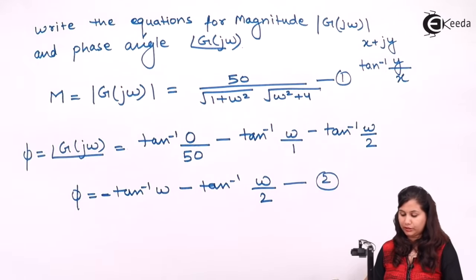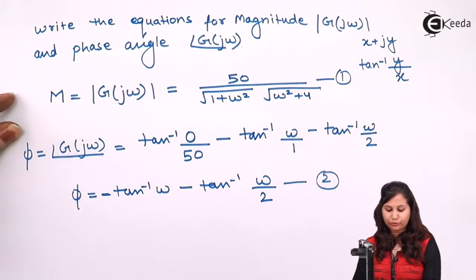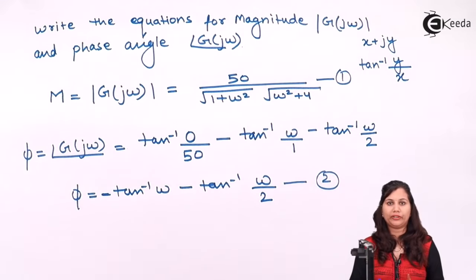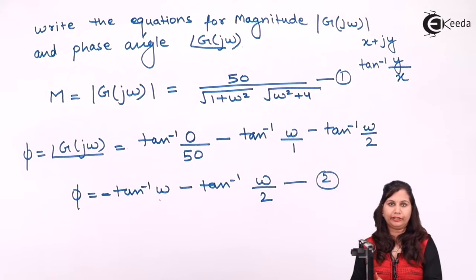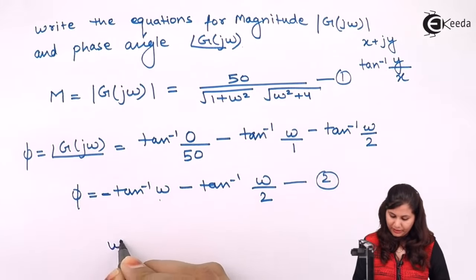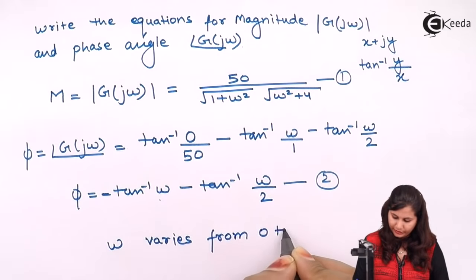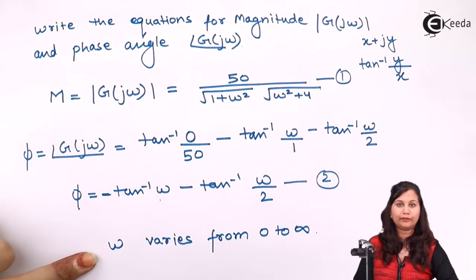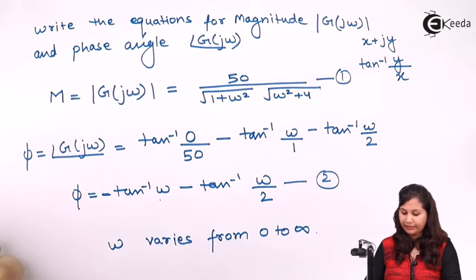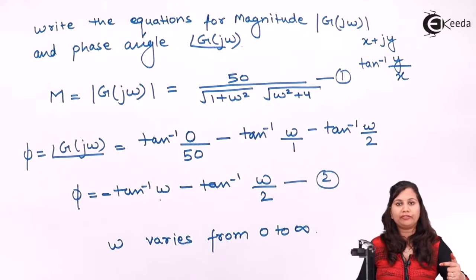Now we will draw the polar plot, which is the plot of magnitude and phase angle on polar coordinates, with omega varied from 0 to infinity. We will draw a table in which we vary the value of omega from 0 to infinity, and then find out the value of the magnitude and the phase angle for various values of omega.